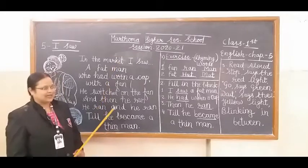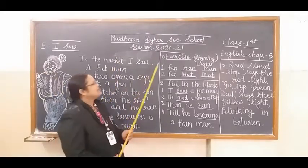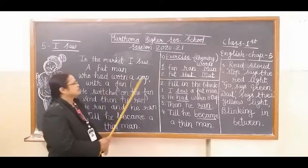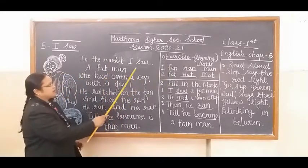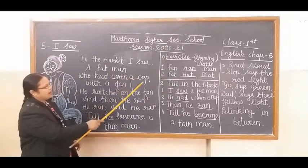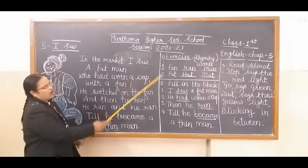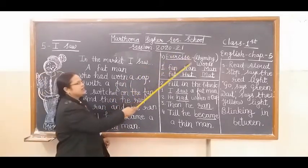So recite that poem once again. Now we are going to start the exercise of this poem. Here we can see there are so many words which are rhyming words.